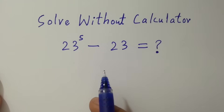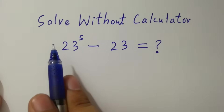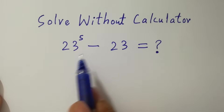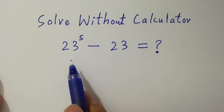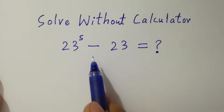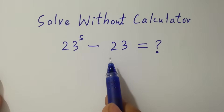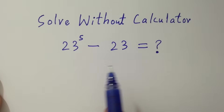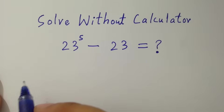Hello friends. Solve without calculator: 23 to the power 5 minus 23 equals what? Let's have a solution.